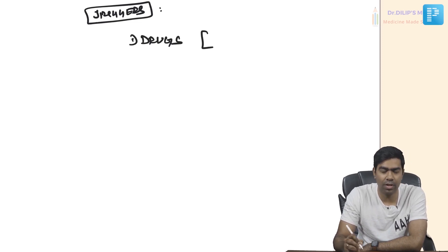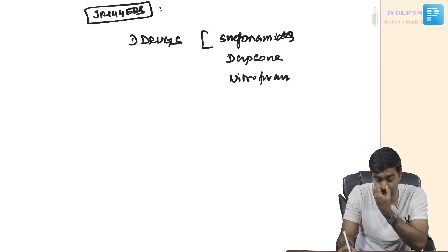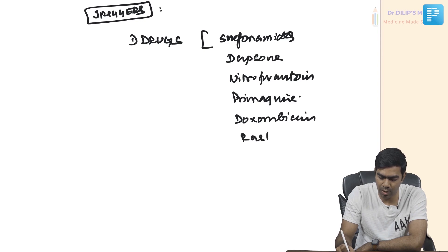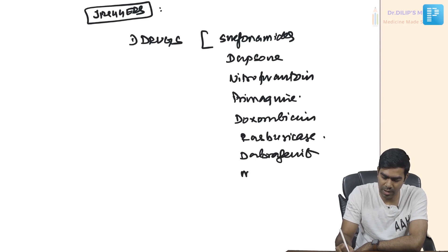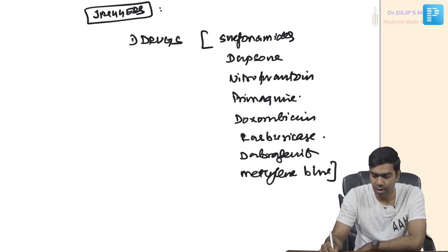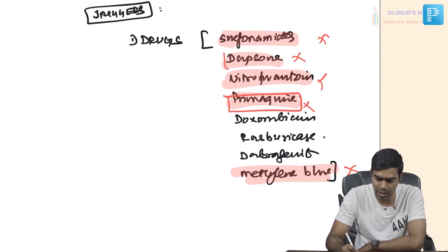The first and most important trigger is drugs. Key drugs for exams include sulfonamides, dapsone, nitrofurantoin, primaquine, doxorubicin, rasburicase/pegloticase, dabrafenib, and methylene blue. For exams, the most high-yield drugs are primaquine and dapsone, which are the most important triggers for hemolysis in G6PD deficiency.